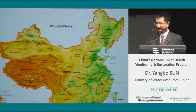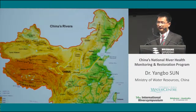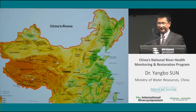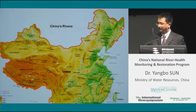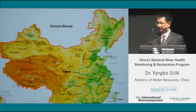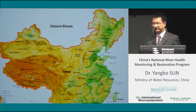The Mekong also originated from this place, as does the Brahmaputra and the Ganges. They all originated from the Tibetan Plateau. But for most Chinese rivers, they start from this plateau and flow east, emptying themselves into the sea. From west to east, we totally have seven large rivers flowing across China.